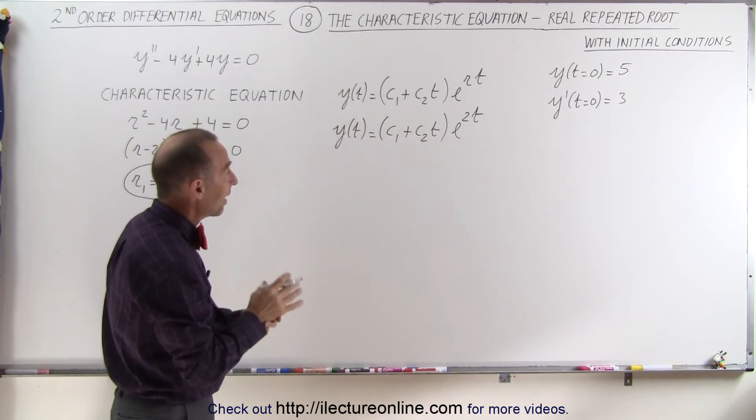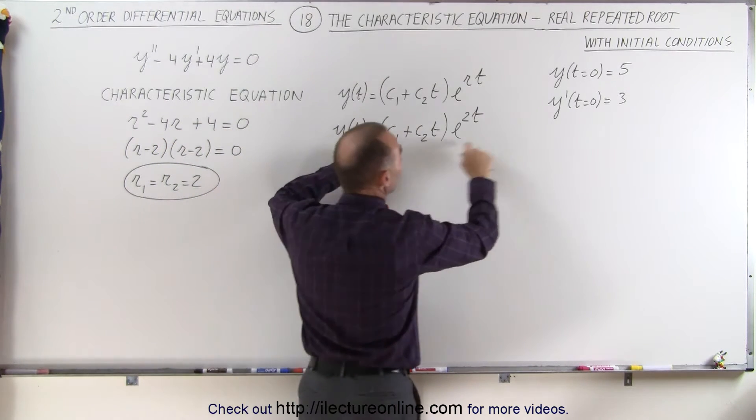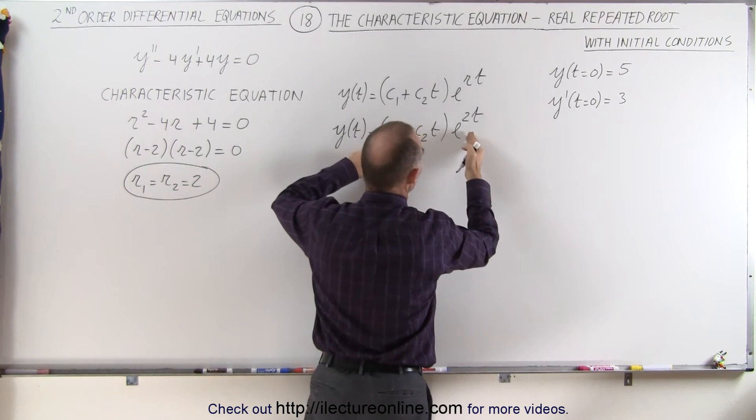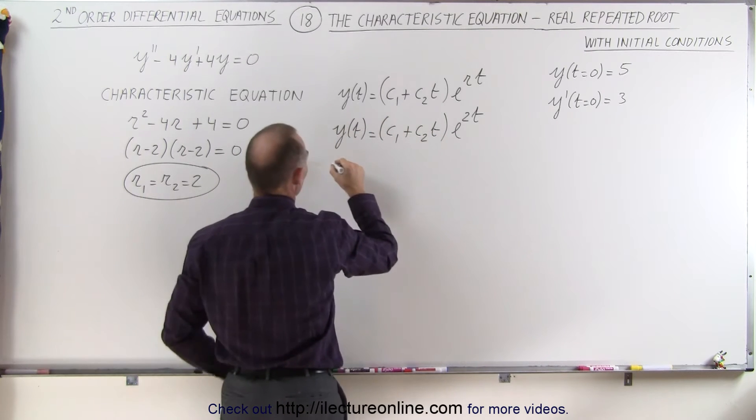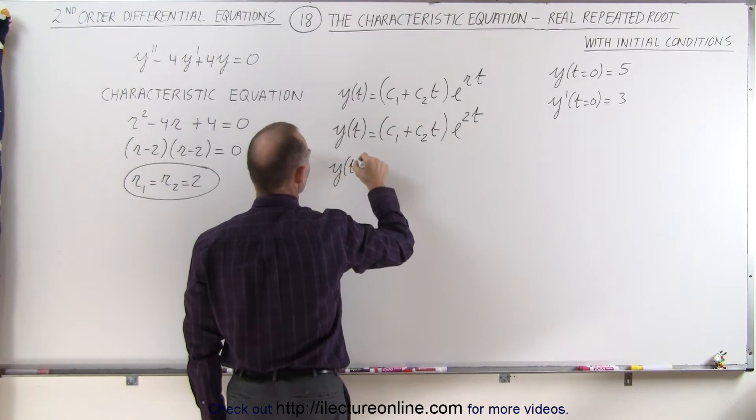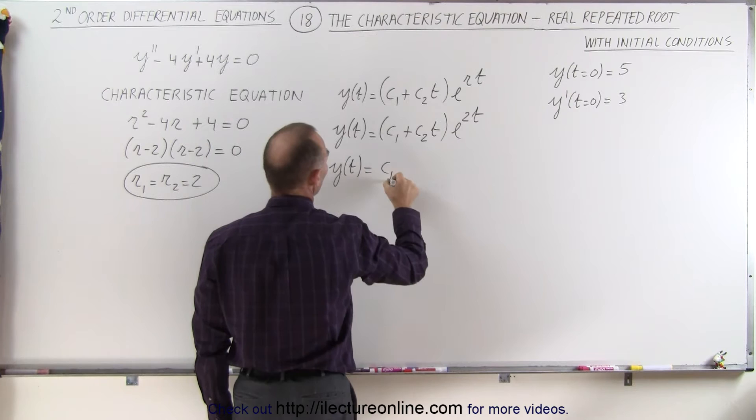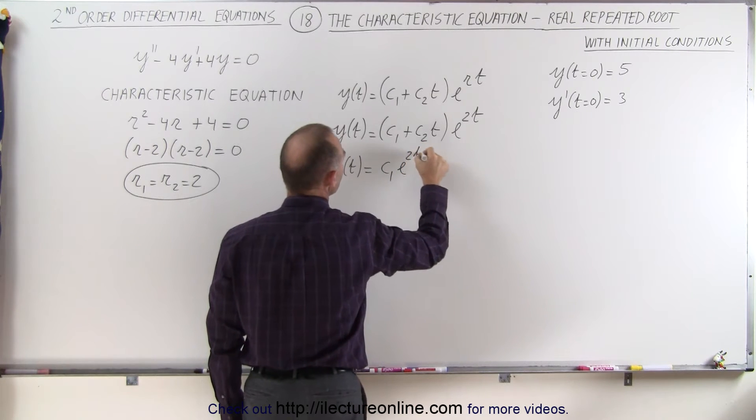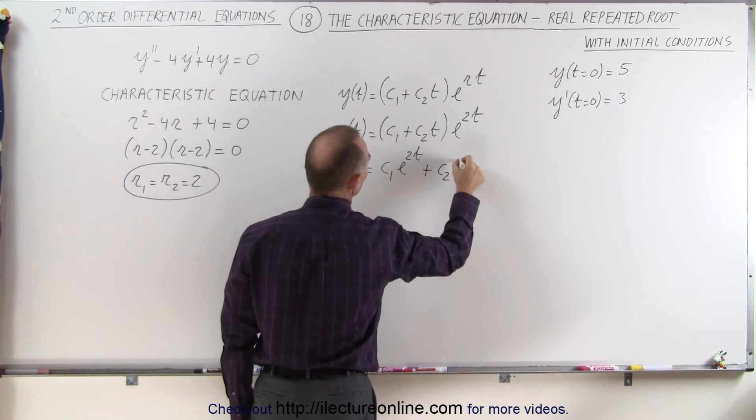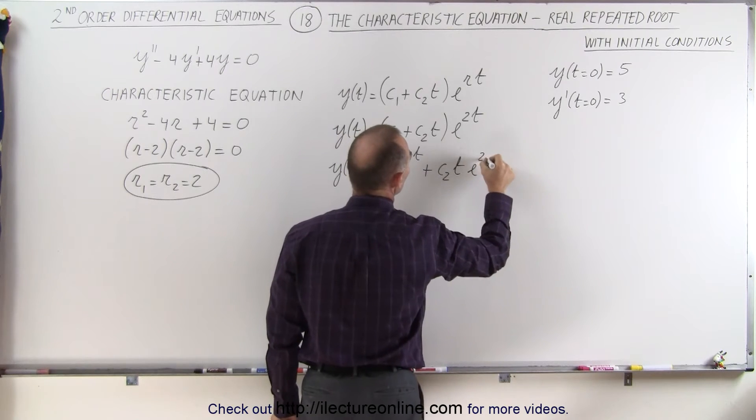Now since we're going to find c1 and c2 using these initial conditions, it's probably better to multiply this through. So write it like this. y as a function of time is equal to c1 e to the 2t plus c2t e to the 2t.